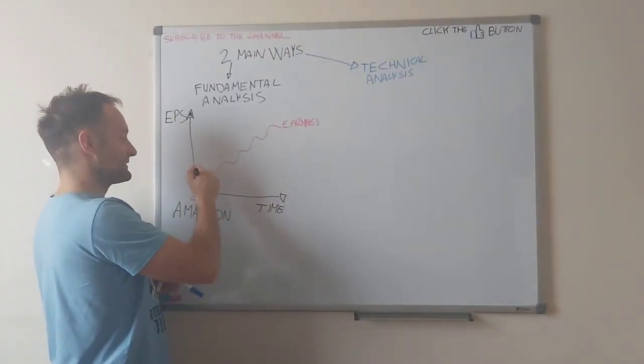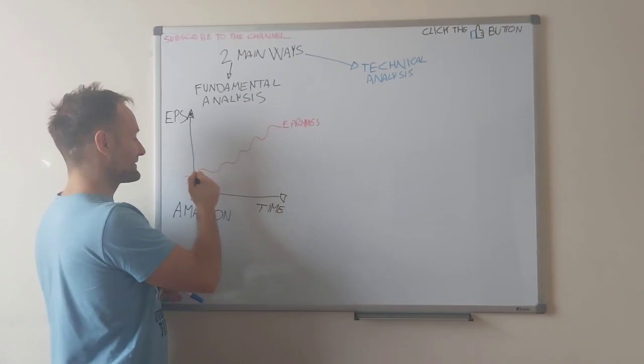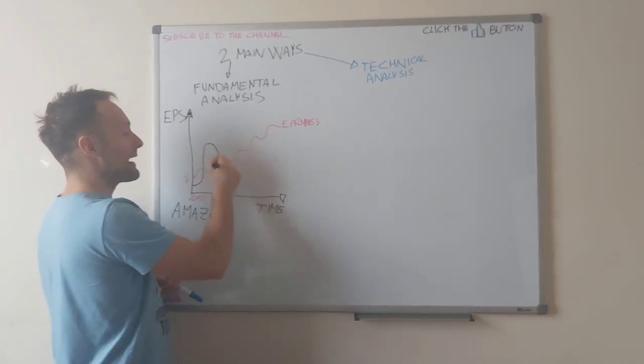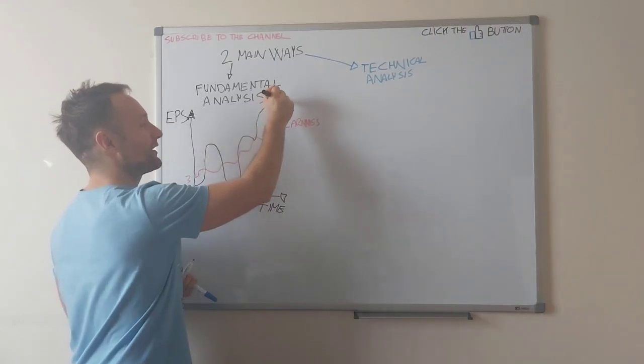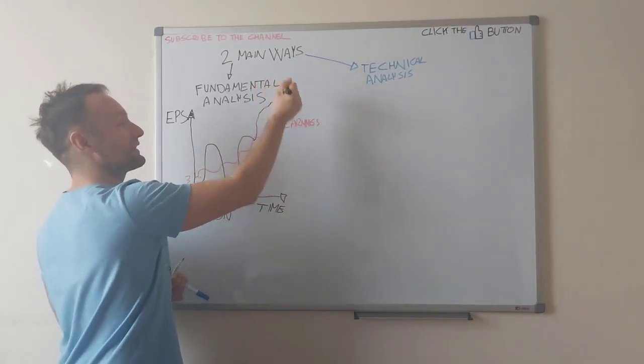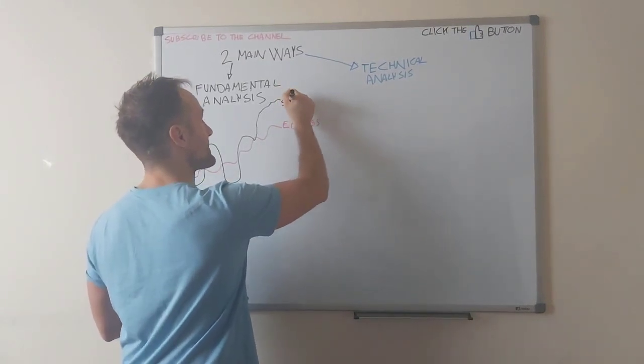And then there is the stock price. Stock price will fluctuate more than earnings. Stock price will go up, will go down, will go up, can stay up for a long time, and potentially then fall down. So here we got the stock price.